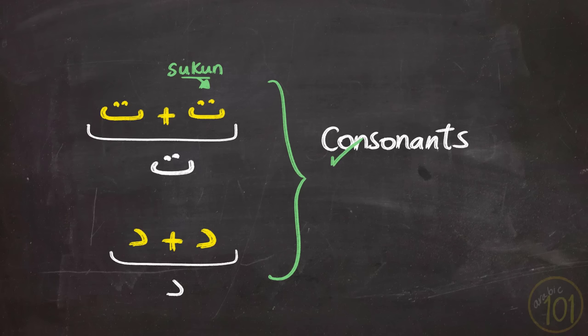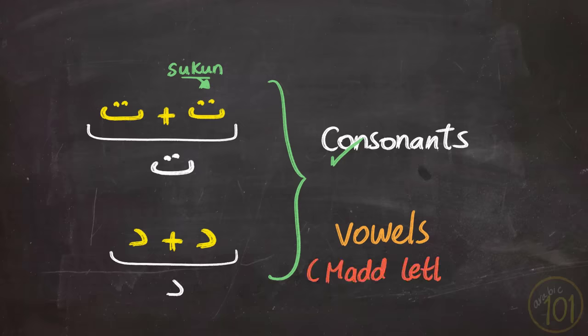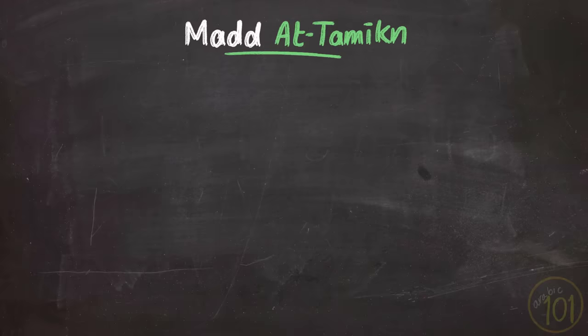So letters like تا, دال, كف, and so on. But the same cannot be said about vowels or مد letters. And this is exactly where مد التمكين is used.